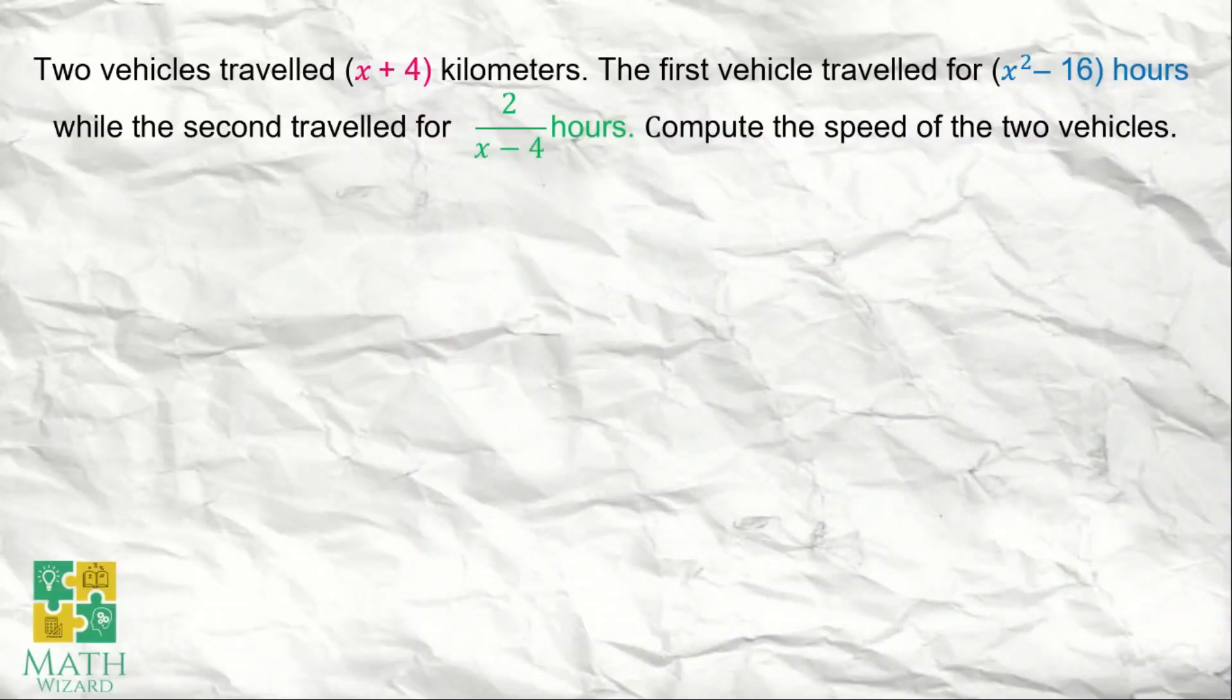Let's have our first example. Two vehicles traveled x plus 4 kilometers. The first vehicle traveled for x squared minus 16 hours, while the second traveled for 2 over x minus 4 hours. Compute the speed of the two vehicles.